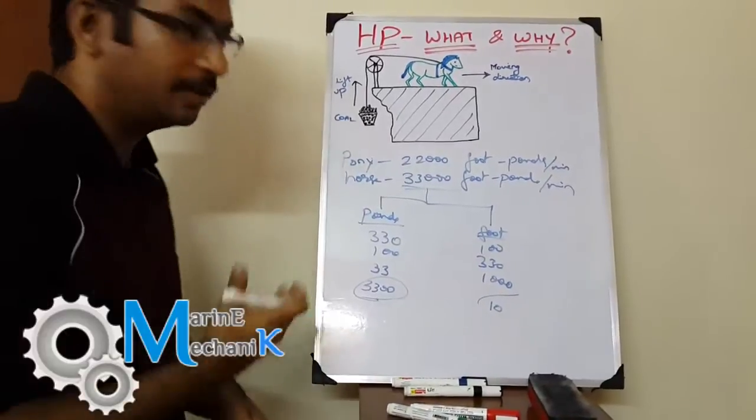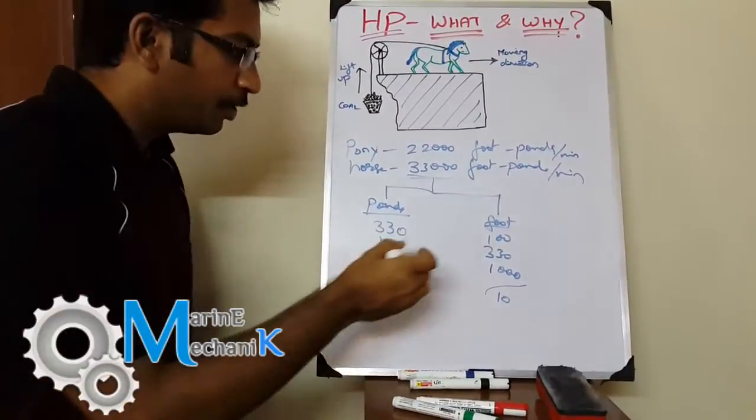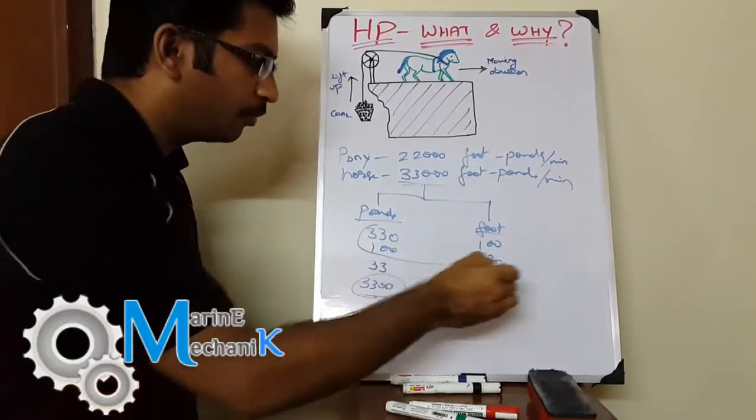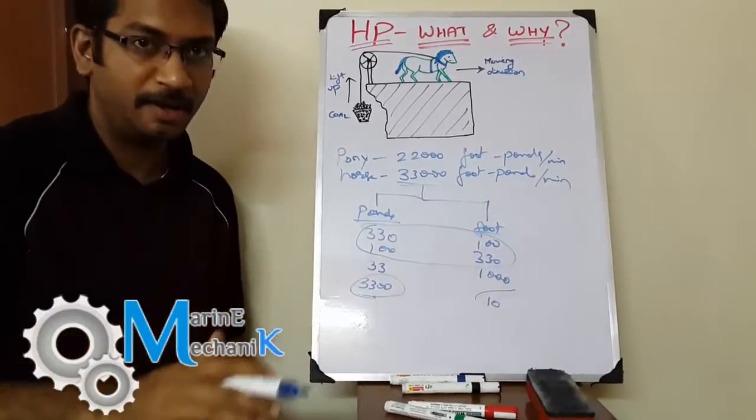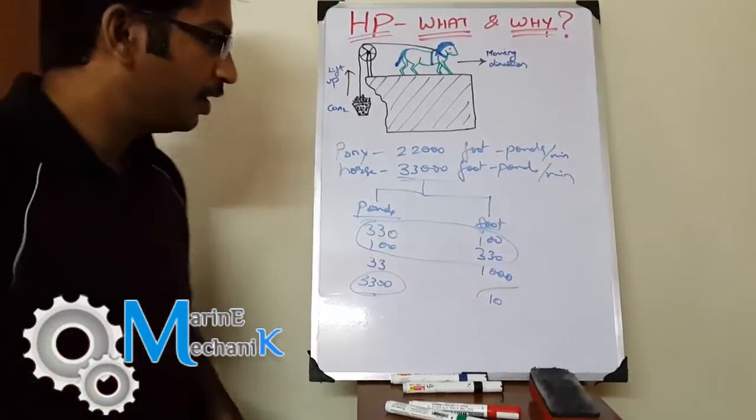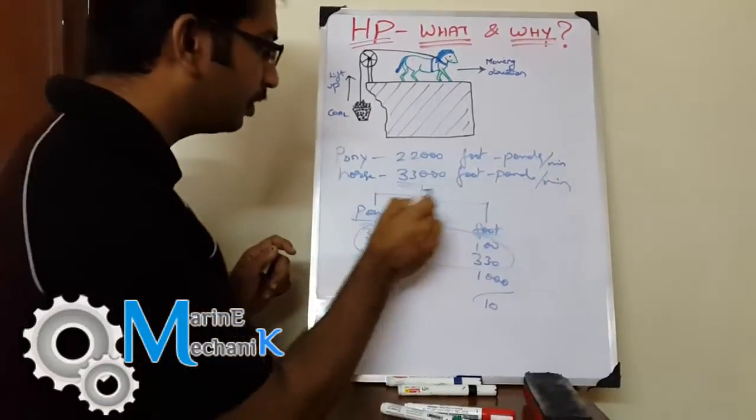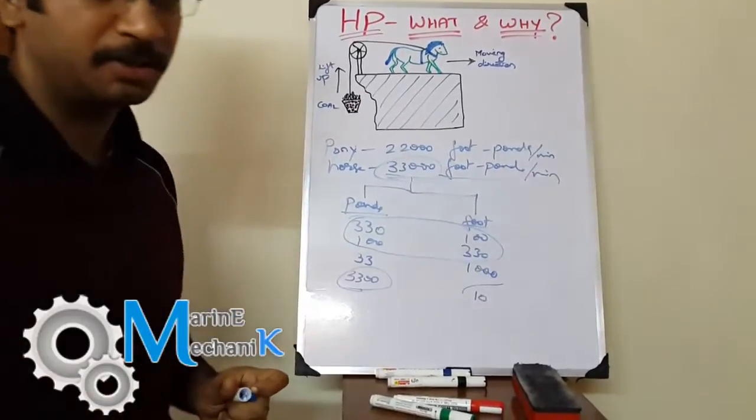You also cannot say 3,300 pounds for 10 feet—that's not possible because the horse is overloaded. You can work out combinations that are well within practical working limits. This is what 33,000 foot-pounds per minute means.